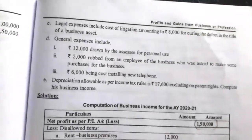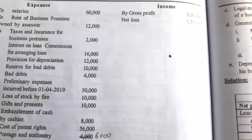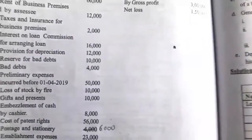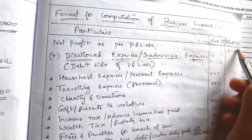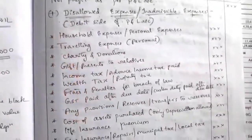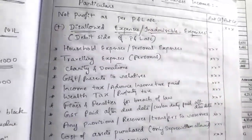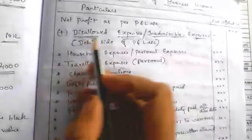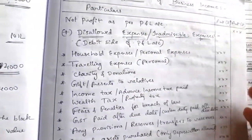With this information we have to compute the business income. In the case of net loss, the same format is used — instead of writing a positive value, we write the loss in brackets as a negative value. The rest of the format is the same: adding the disallowed expenses and deducting income to be treated separately.